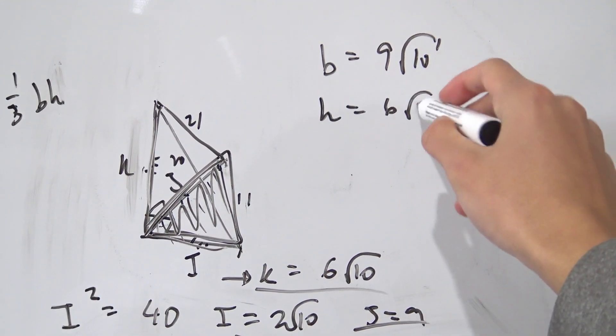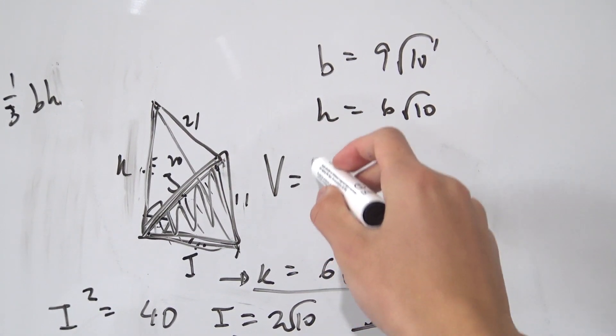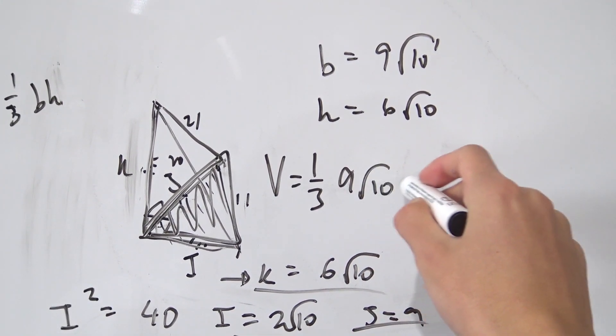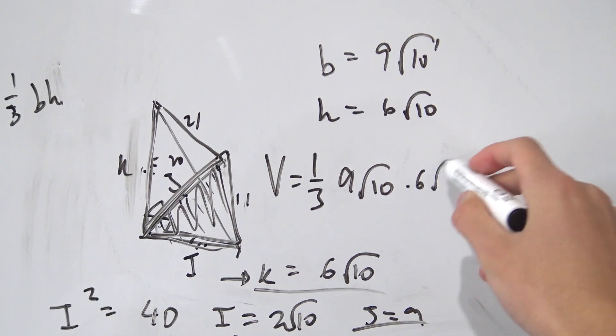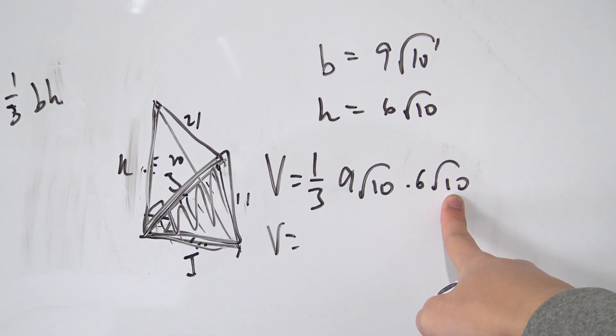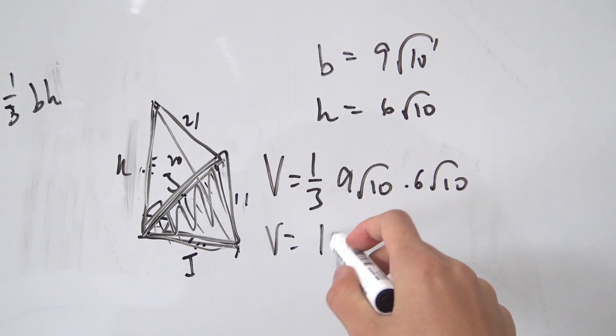So our height is 6 root 10. And now plugging this into the pyramid formula, we're going to get the total volume being equal to one third base is 9 root 10 times height, which is 6 root 10. And then overall, we're going to get, well, root 10 times root 10, that's 10. And then 9 times 6, which is 54, divided by 3 is 18. So we should get 180.